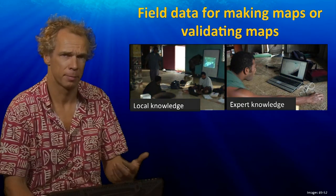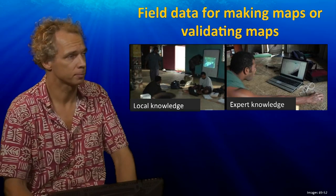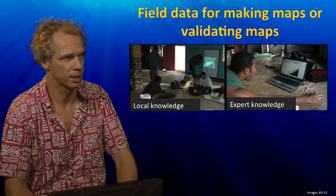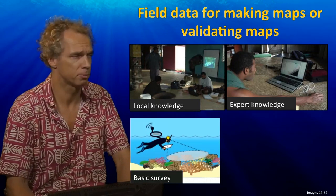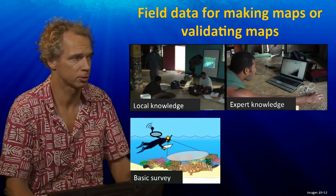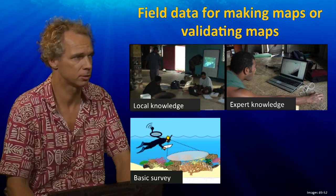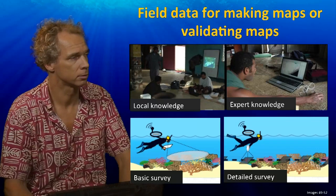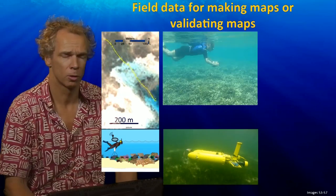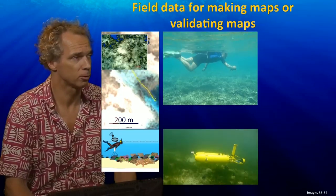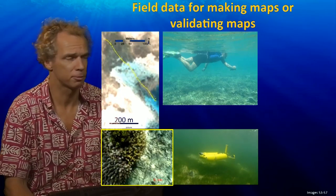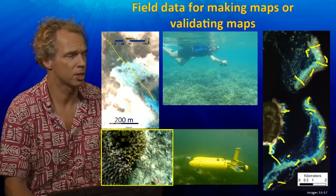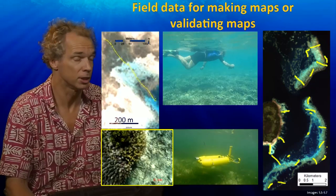To fill in the gaps and help with mapping these environments, there are different ways to collect field data. This can be done through local or expert knowledge, by talking with local people who use that area or experts in the field. Alternatively, we go into the field ourselves, using a GPS floating at the surface to get a position and then snorkeling or diving to record what we see — a basic survey. We can also conduct detailed surveys using photo transects, where a diver, snorkeler, or robot follows the bottom and takes photos at regular intervals. These photos are georeferenced to the satellite image based on synchronization of the camera with the GPS at the surface, providing a large amount of detailed field information across the study area.